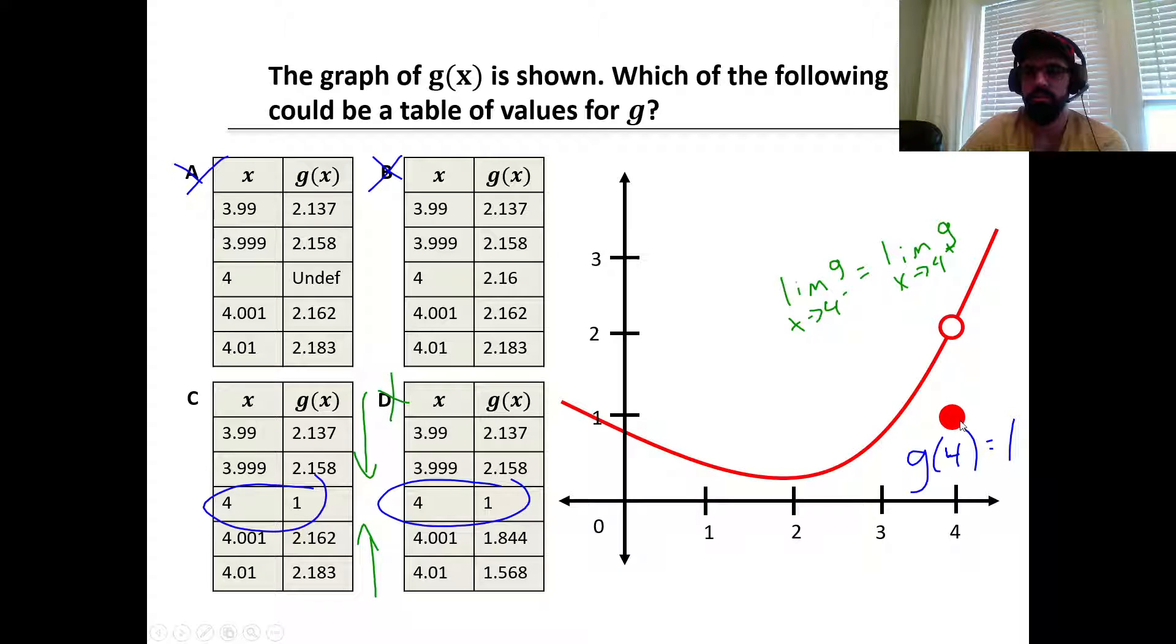So because of this dot, it defines g(4) to be 1, we can eliminate A and B for that reason alone. Because 4 should map to 1, not undefined, not 2.16. So either C or D.